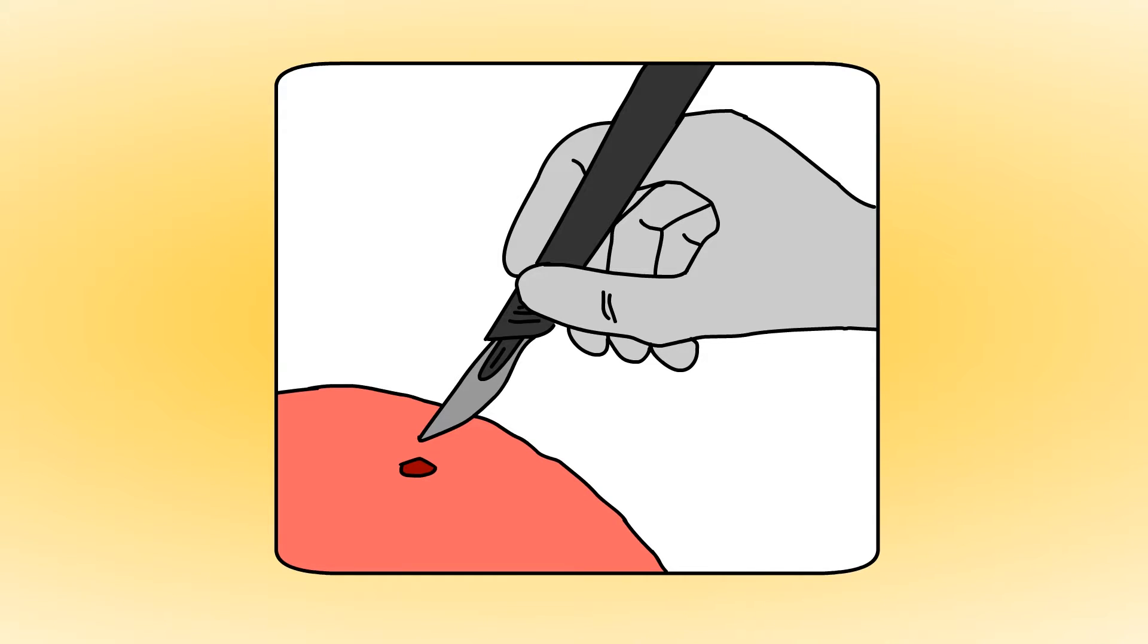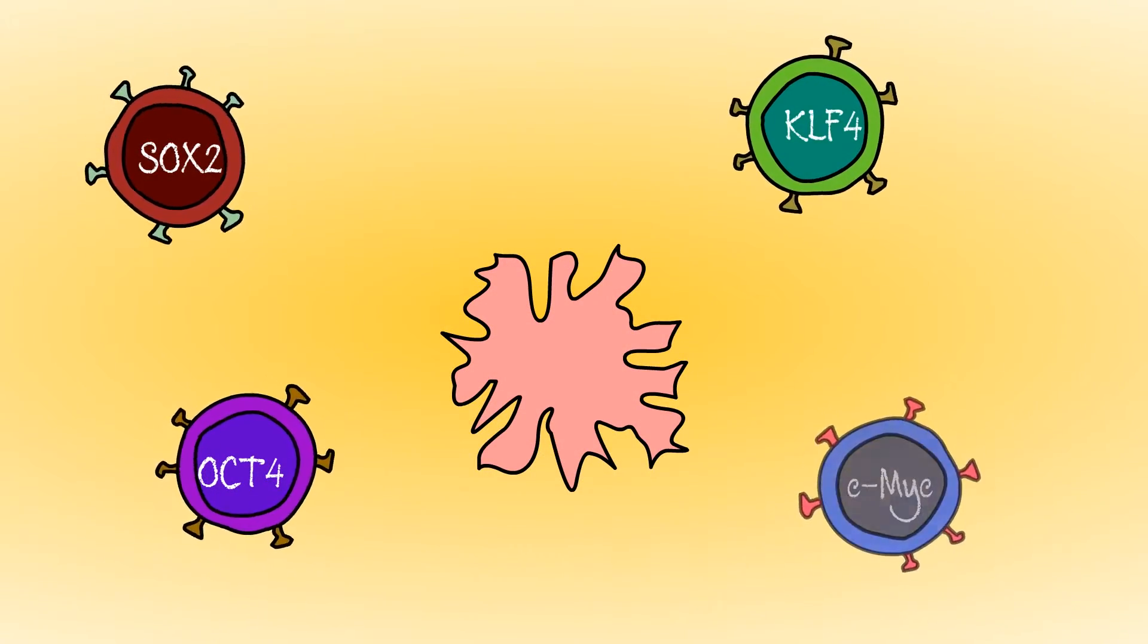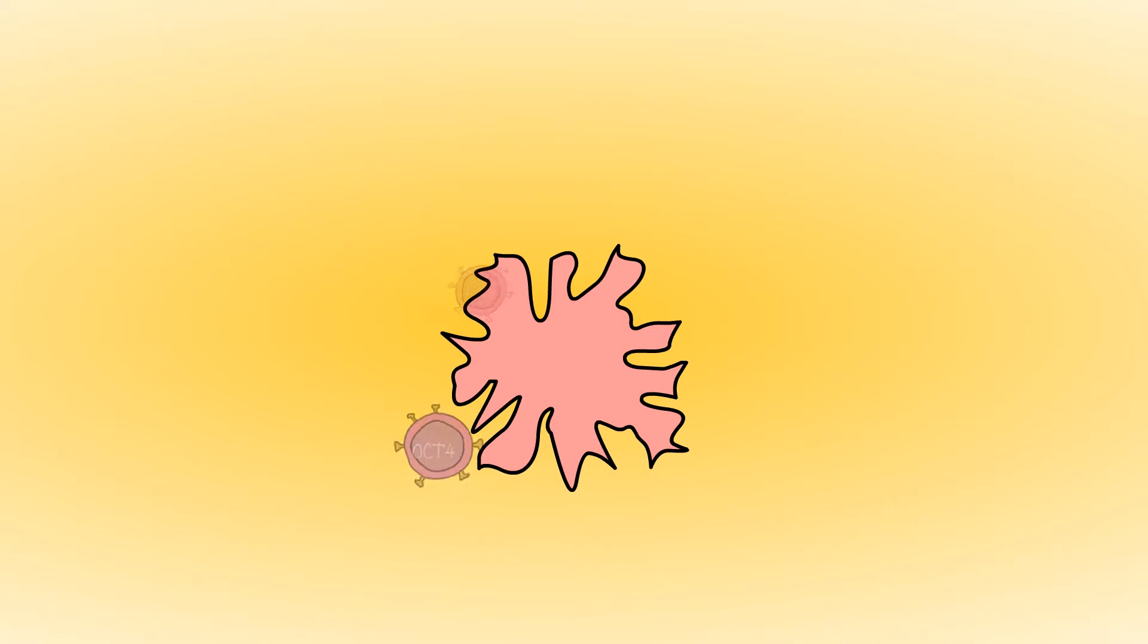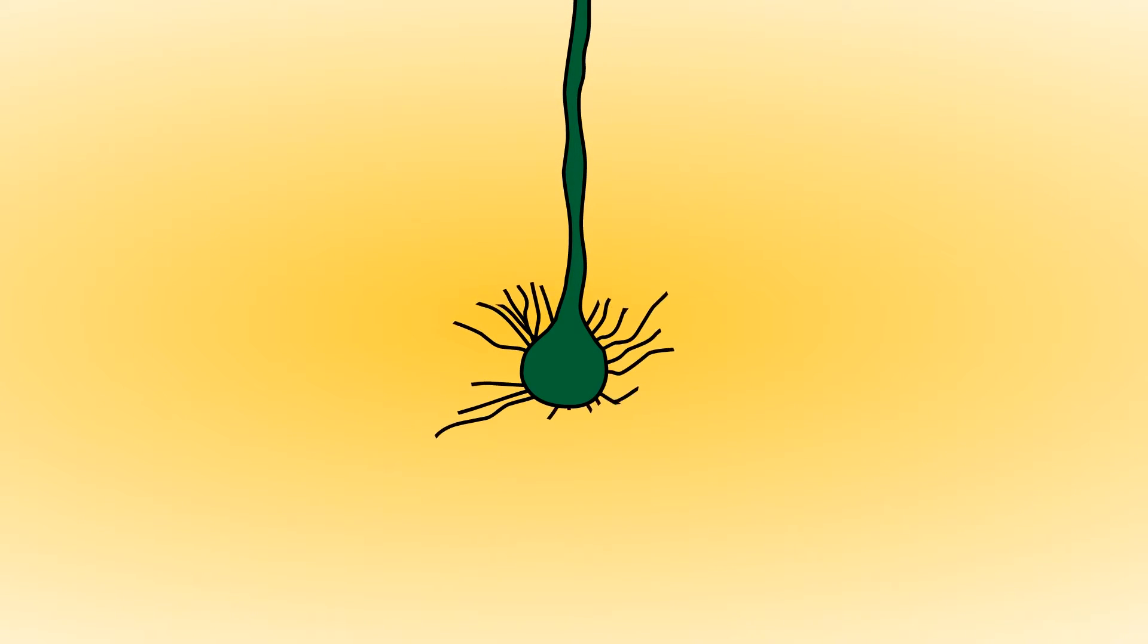So, how can we study ALS if we need to get motor neurons from the affected patients? Fortunately, there's a way to do this. It's called cellular reprogramming, and it starts with the skin biopsy. The skin cells are grown and infected with viruses carrying four reprogramming factors. The skin cells are reprogrammed into induced pluripotent stem cells, or iPSCs for short. iPSCs can be differentiated into any cell type in the body. By treating them with the correct molecules, we can generate motor neurons from patients with mutations in HNRNP A2B1.